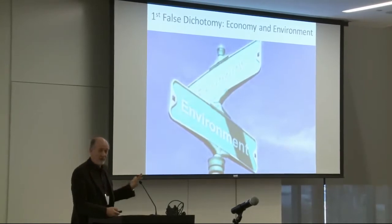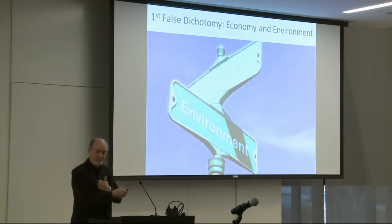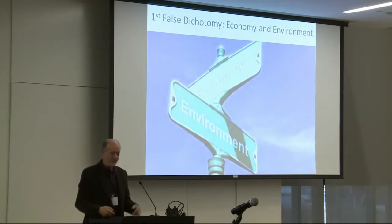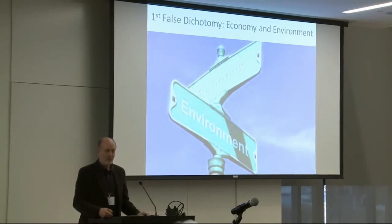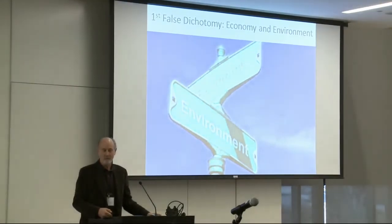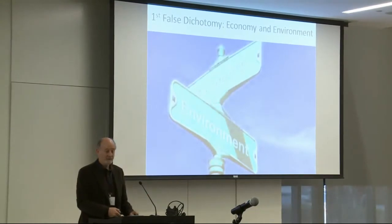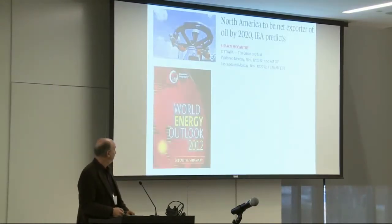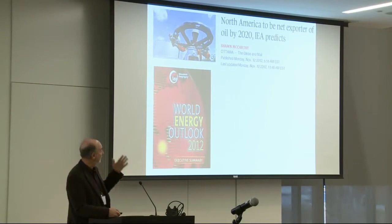The first dichotomy: economy and environment. That's a graphic I picked off the internet — the idea that these things just go in different directions, often discussed by different communities of people. What I think is so important, especially these days, is that when we are working as economists, we never lose sight of the fact that the economy is embedded in the biosphere. Here's an example of what happens when you do lose sight of that.